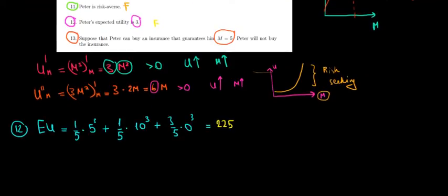If we have 5 euros for sure, what is going to be our utility from that? The utility that we have from having 5 euros for sure is going to be equal to 125.